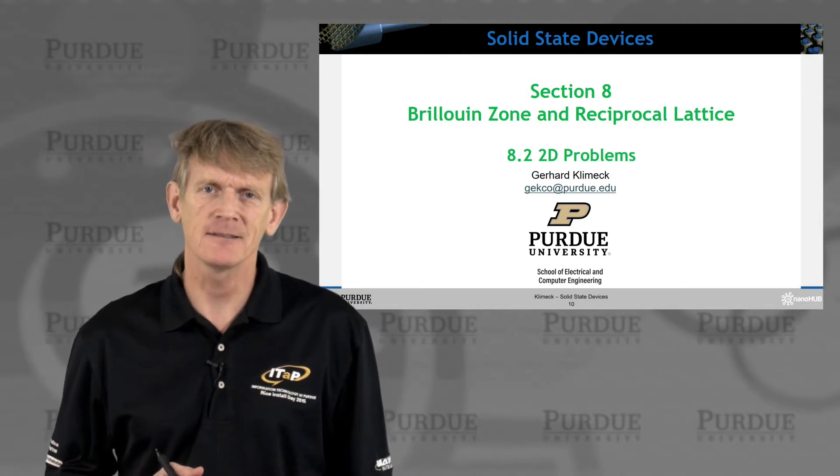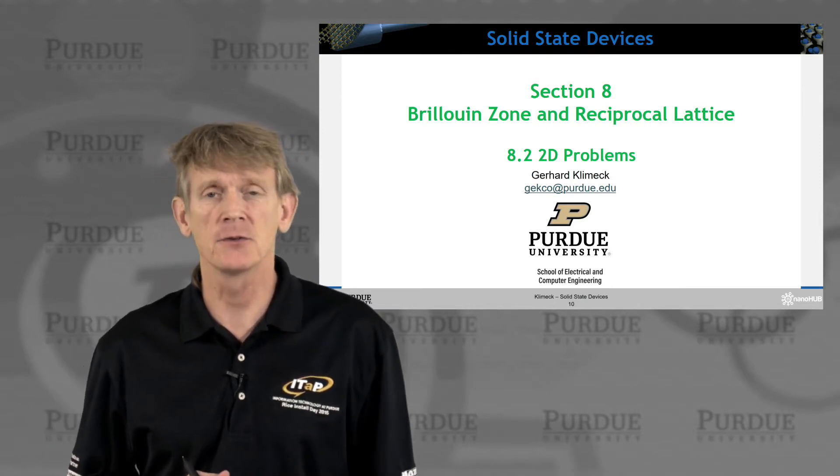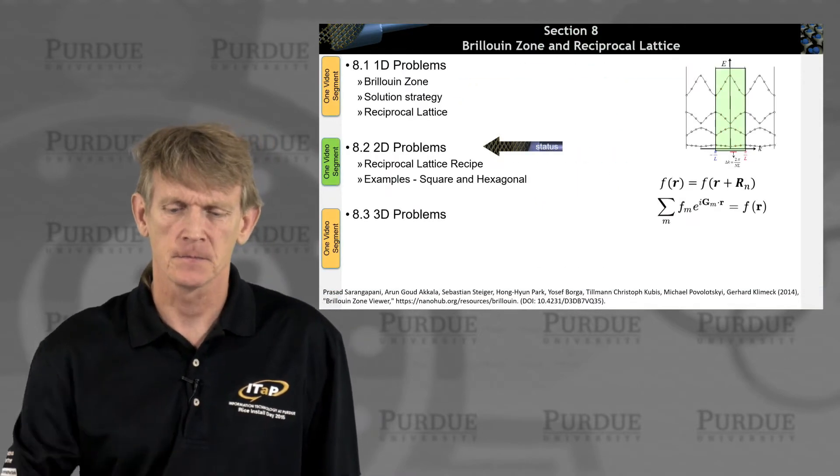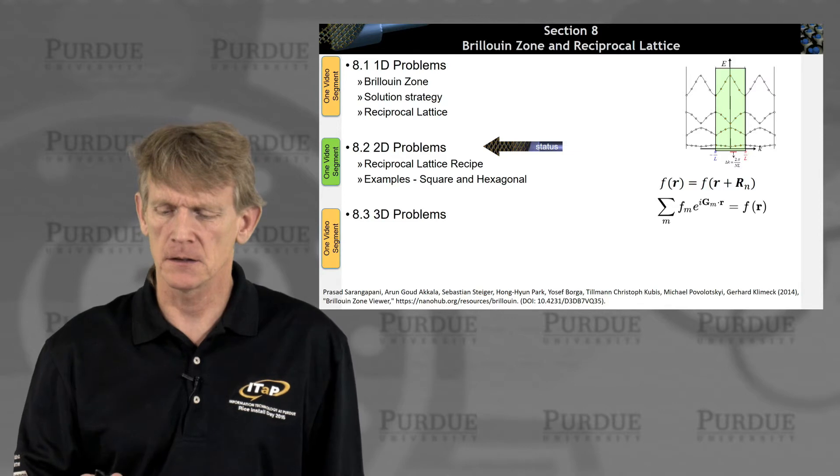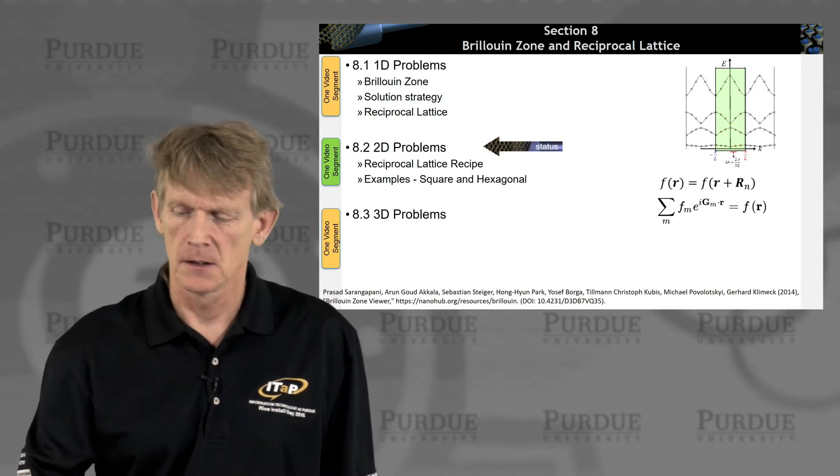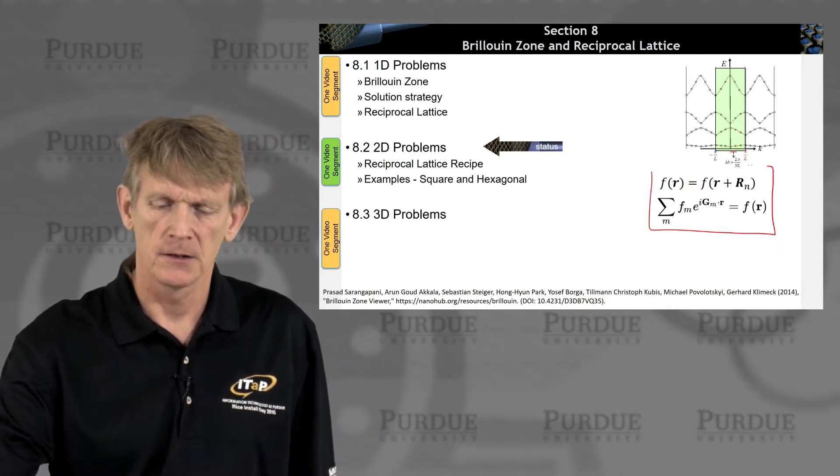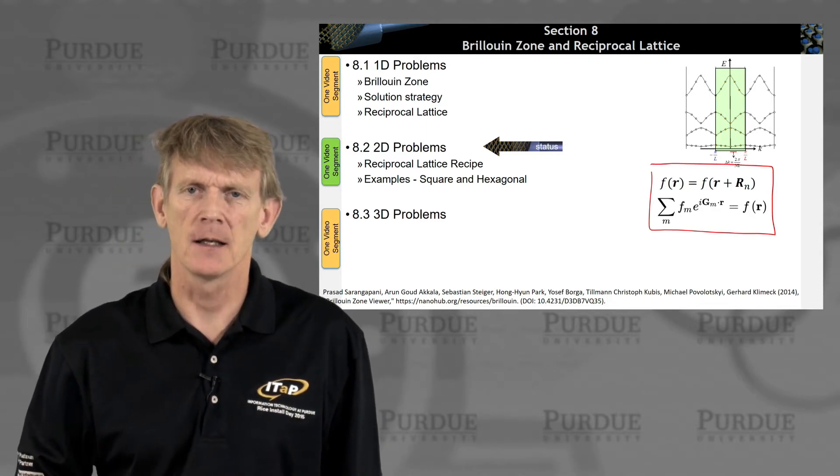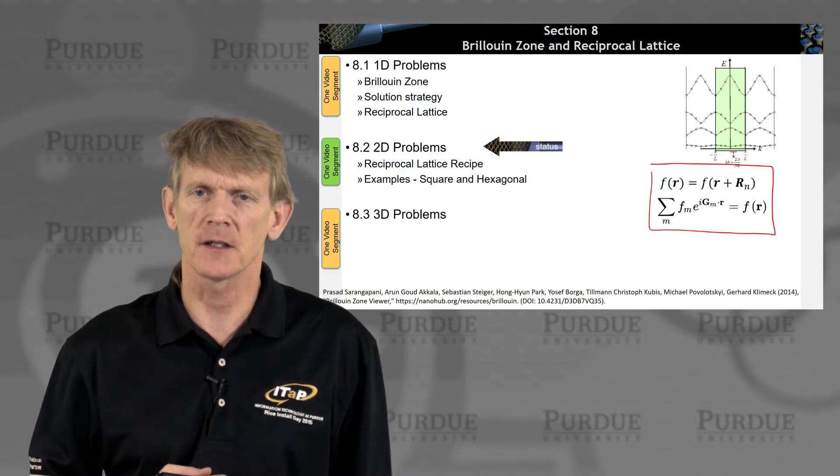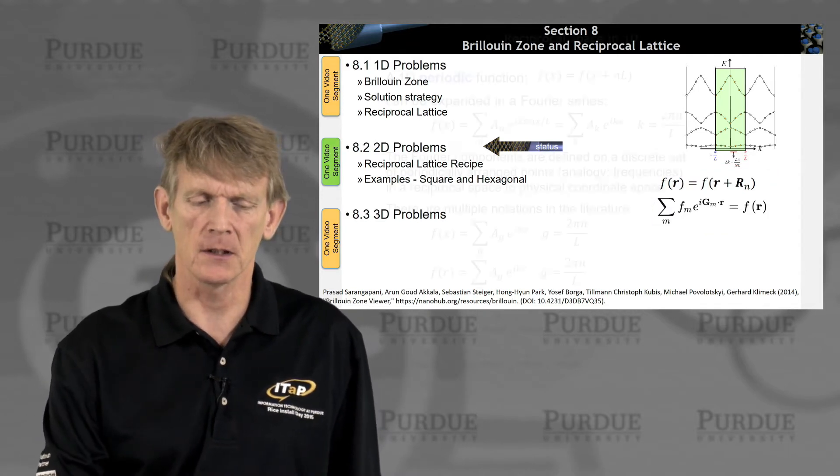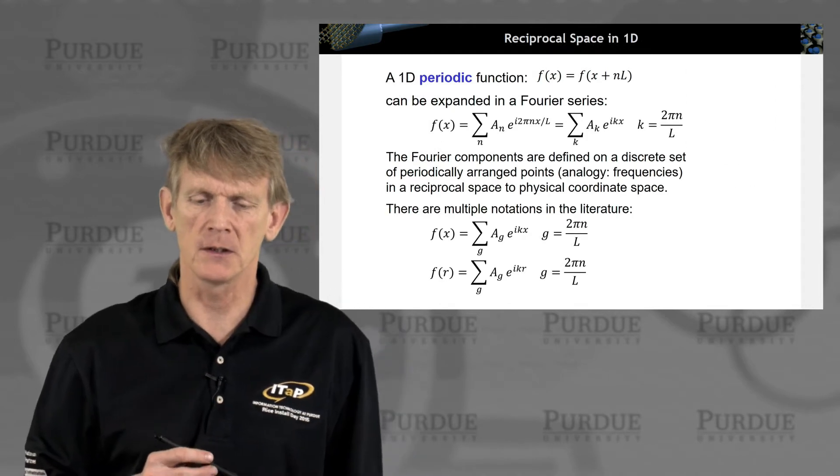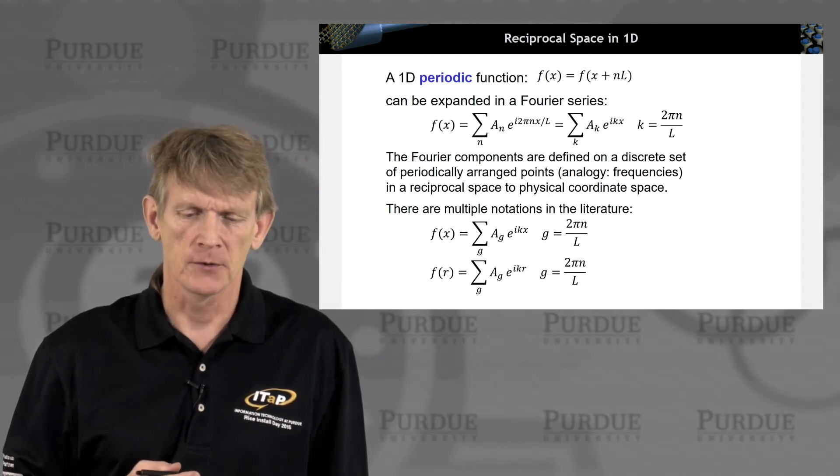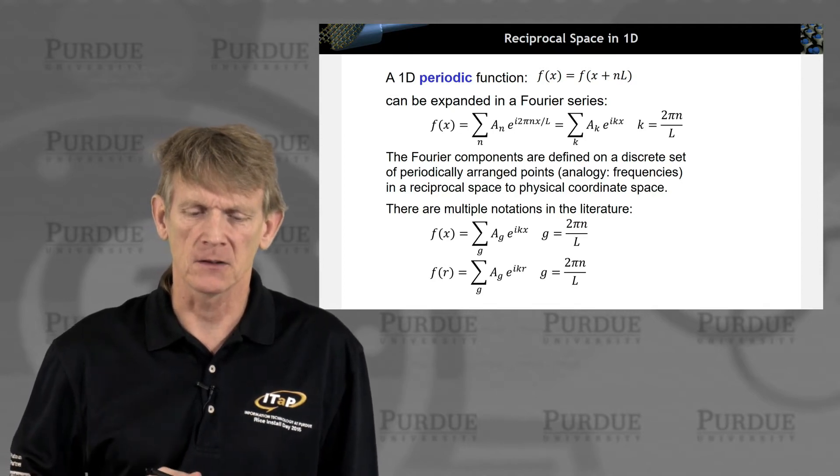All right, so here we are. This is Section 8.2, where we're going to look at 2D problems of the Brillouin zone and the reciprocal lattice. We started in the last segment where we looked at functions that repeat themselves within a certain lattice, and that was a one-on-one relationship between the basis and the expansion.